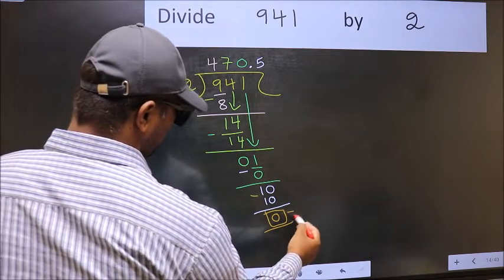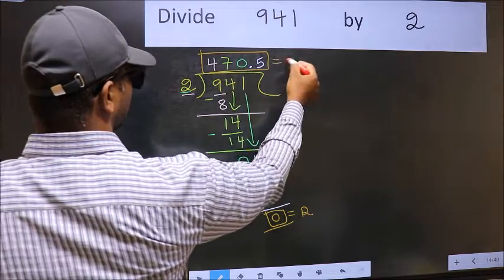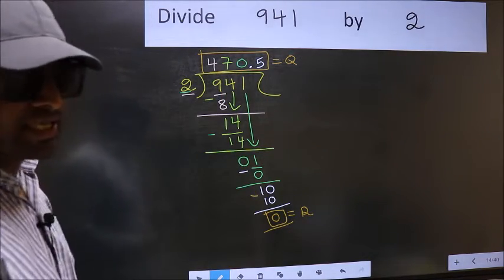So this is our remainder. And this is our quotient. Did you understand where the mistake happens?